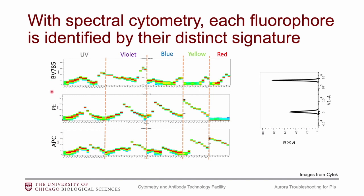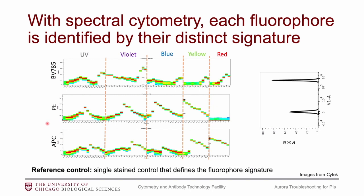You can see that each of these three fluorophores has a very distinct signature — the more distinct the signature, the easier it is to separate the fluorophores. These single stains are essentially our reference controls, which are very important for our experiments. Reference controls are very comparable to compensation controls: they are a single stain control that defines the fluorophore signature, and they are important for unmixing the data.